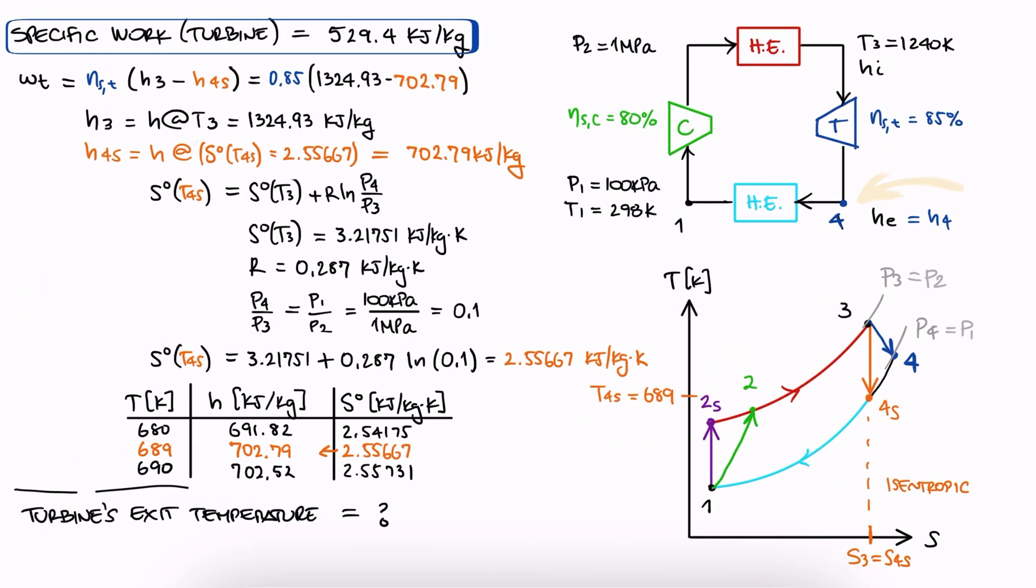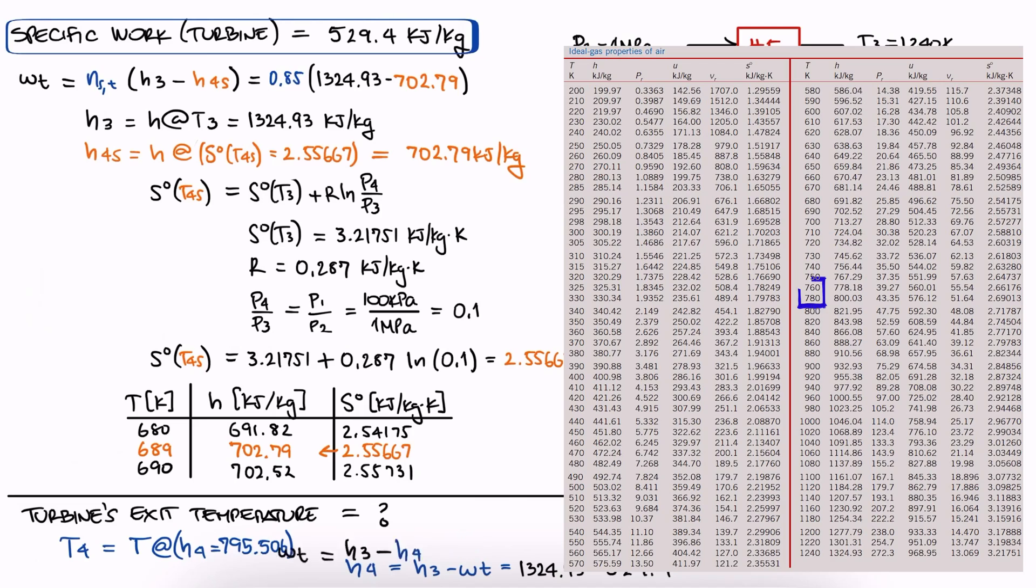Now, for the temperature at the exit of the turbine, which is 4, not 4s, we can find the corresponding temperature for H4 if we first find H4. And since the real work of the turbine we just found is H3 minus H4, and we have H3, we solve for H4, and with that value, find the temperature that corresponds to it by interpolating.